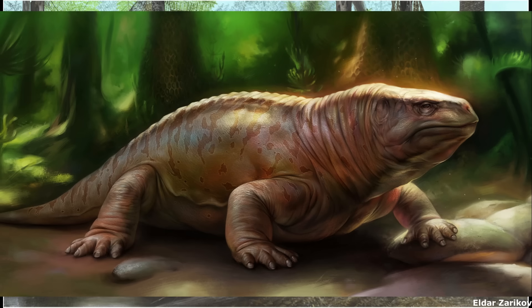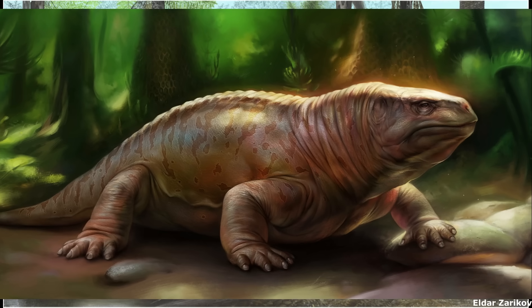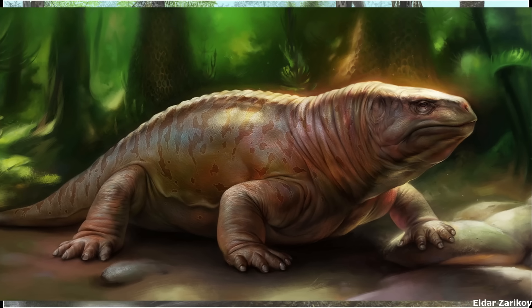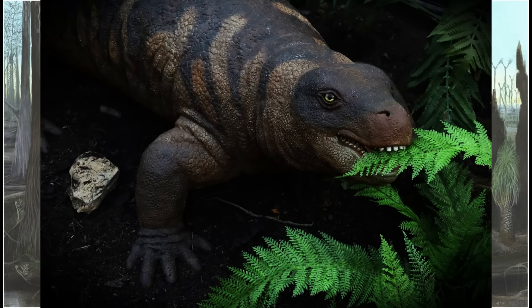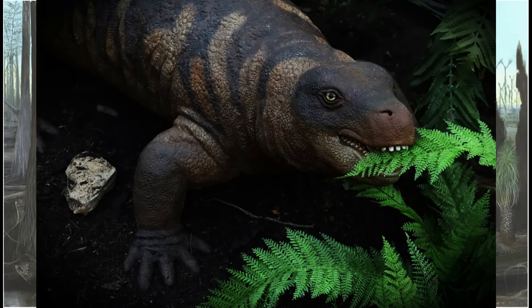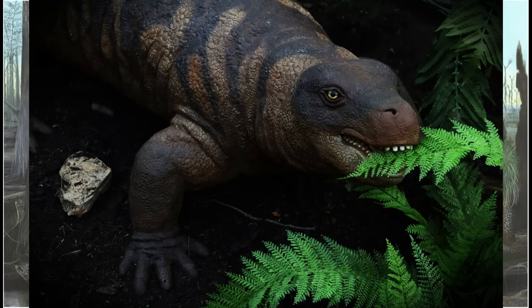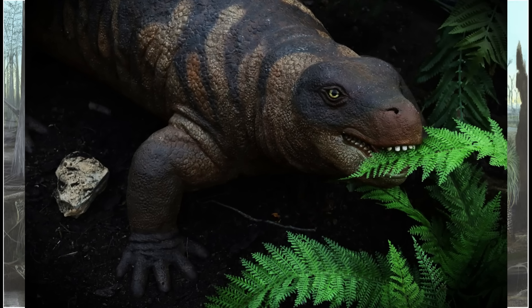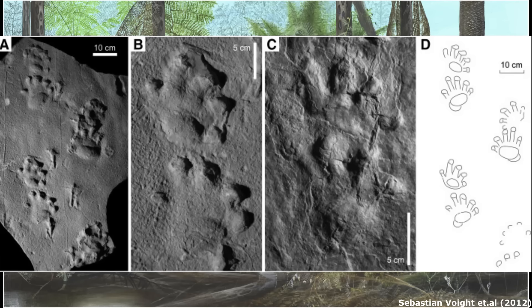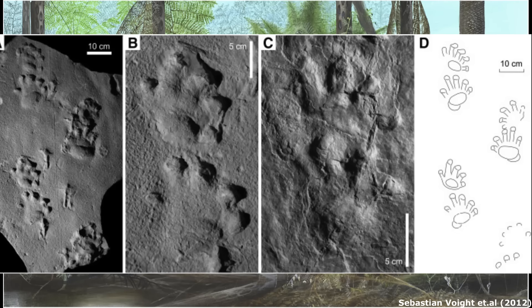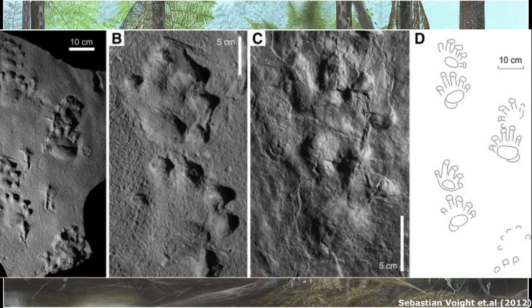Like all diadectomorphs, it possessed a strange mixture of basal and derived traits, such as a large otic notch, which is a feature found in all labyrinthodonts but not in reptiles, also possessing an ossified tympanum. At the same time, its teeth show advanced specialisations for a herbivorous diet that are not found in any other early Permian animal. It also had a partial secondary palate, which meant that it could chew its food and breathe at the same time, as modern mammals can. Despite their somewhat stumpy appearance, fossil trackways suggest that this animal walked with an almost erect posture, not a bad feat for an early Permian genus.